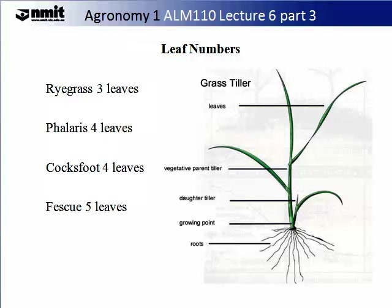Tillering is influenced mainly by light, nutrient supply (particularly nitrogen) and temperature. Tillering is highest under high light levels, mid temperatures of about 13 to 25 degrees C, and adequate moisture and nutrient availability. Once emerged, the daughter tiller is completely reliant on the parent or primary tiller until it develops its own leaves and roots, which generally takes several weeks. If the primary tiller is stressed during this time, the daughter tiller will be sacrificed and may die.